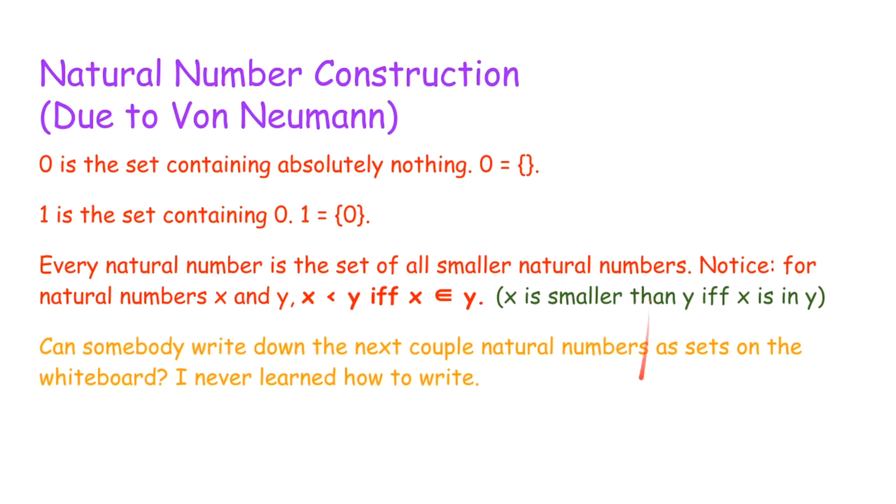And here I would ask you to write down the next couple natural numbers as sets. But I can't do that. So instead I'll just tell you - two is the set containing zero and one, and three is the set containing zero, one, and two. Four is the set containing zero, one, two, and three, et cetera.